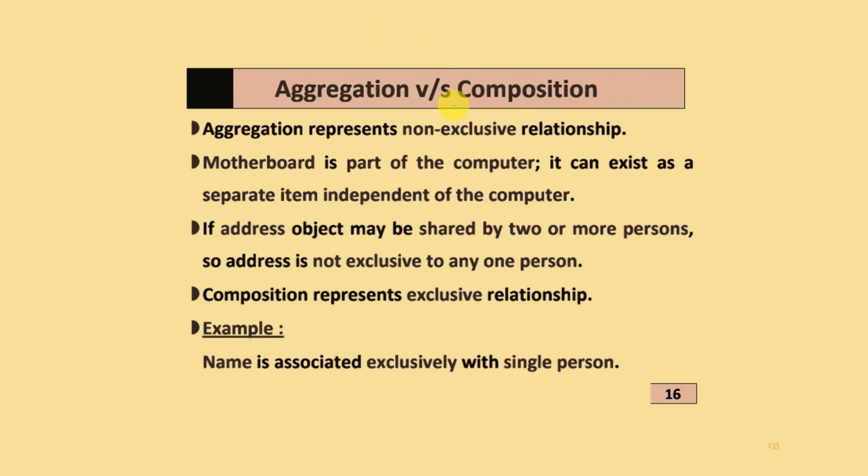Aggregation versus composition: Aggregation is represented with non-exclusive relationships. Motherboard is part of computer and exists as a separate item independent of the computer. Address object may be shared by two or more persons, so address is not exclusive to any one person. Composition is represented by exclusive relationship. For example, name is associated exclusively with a single person.